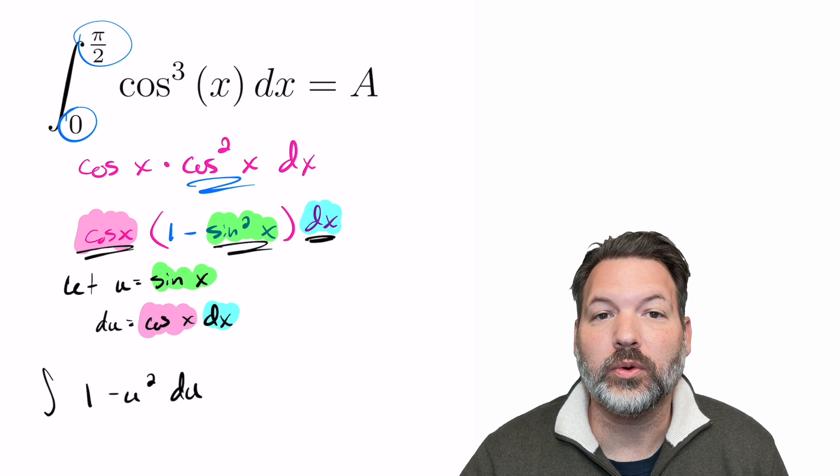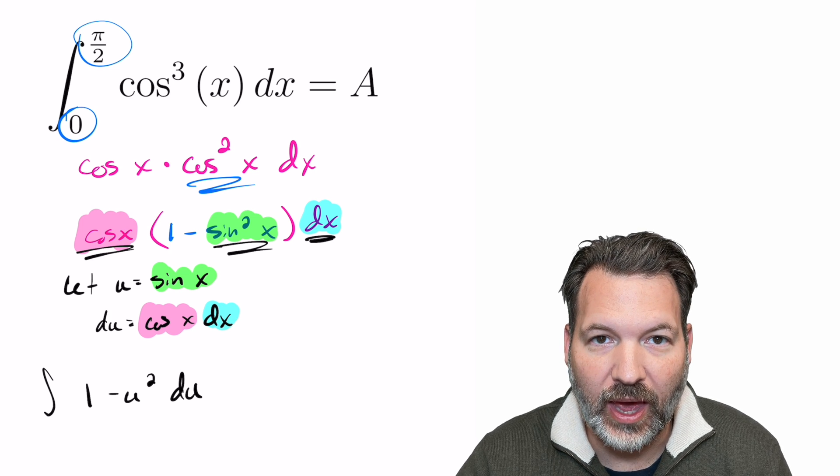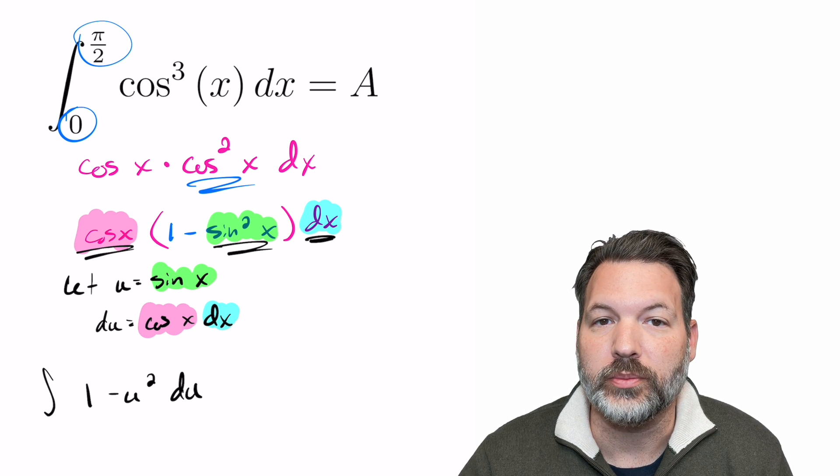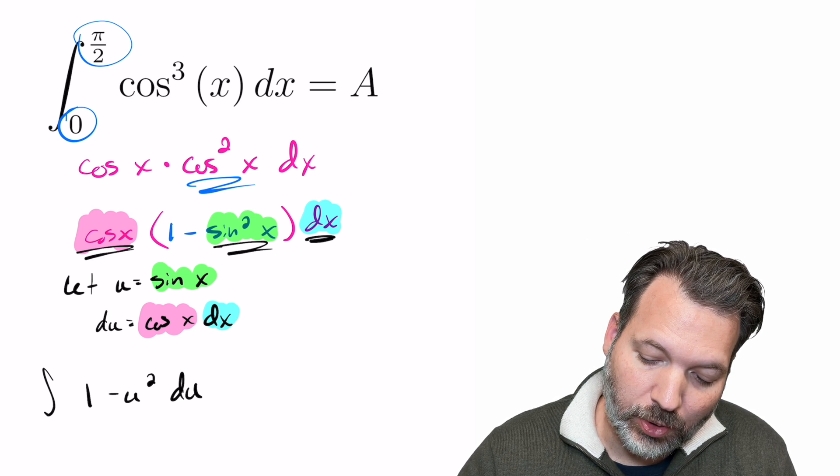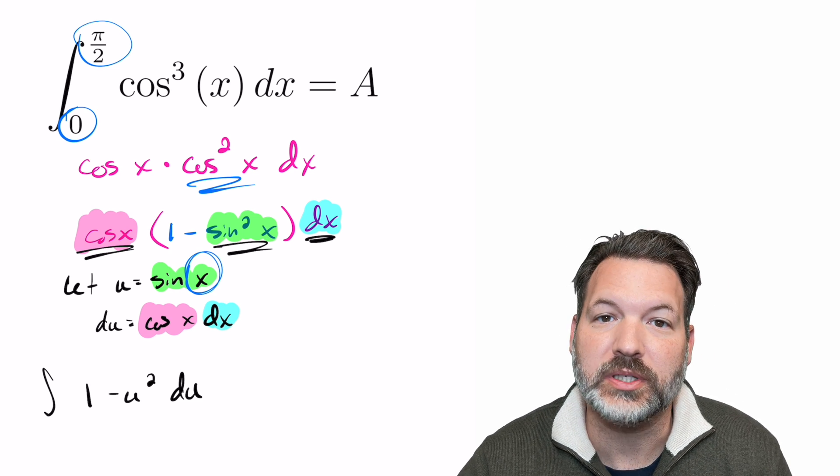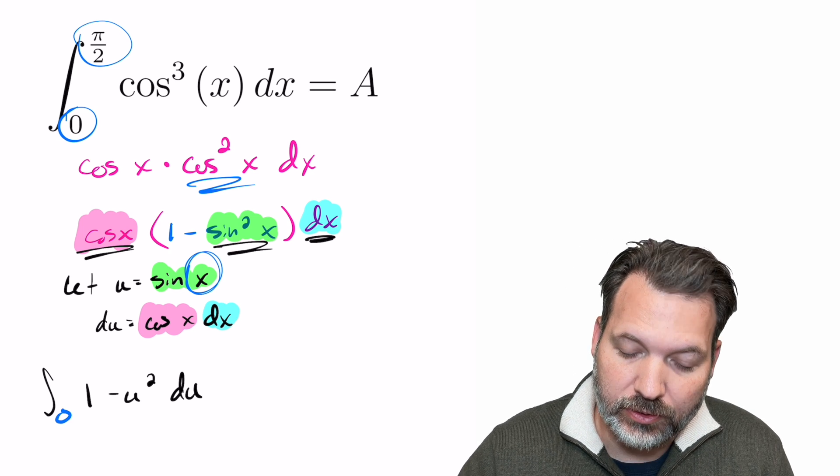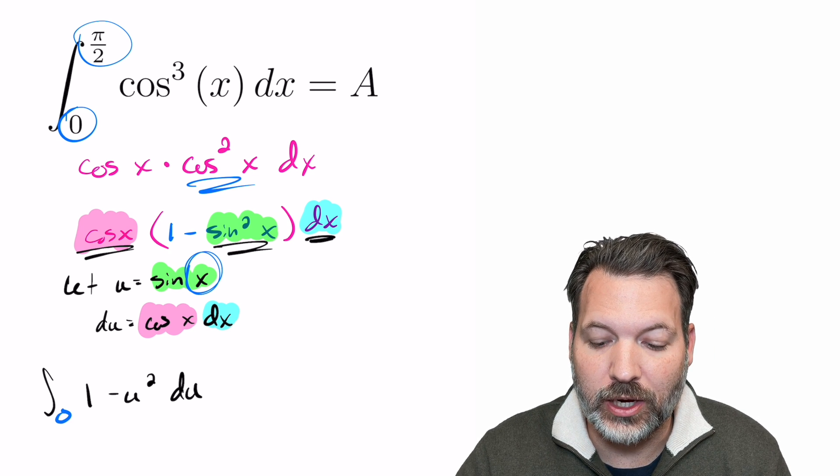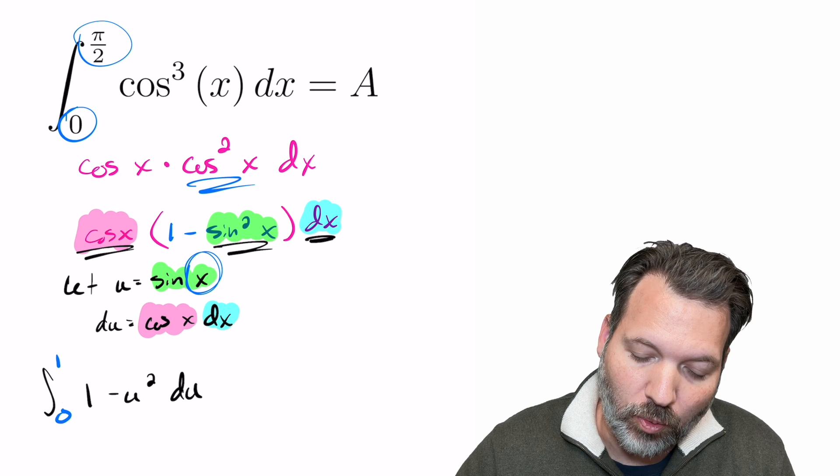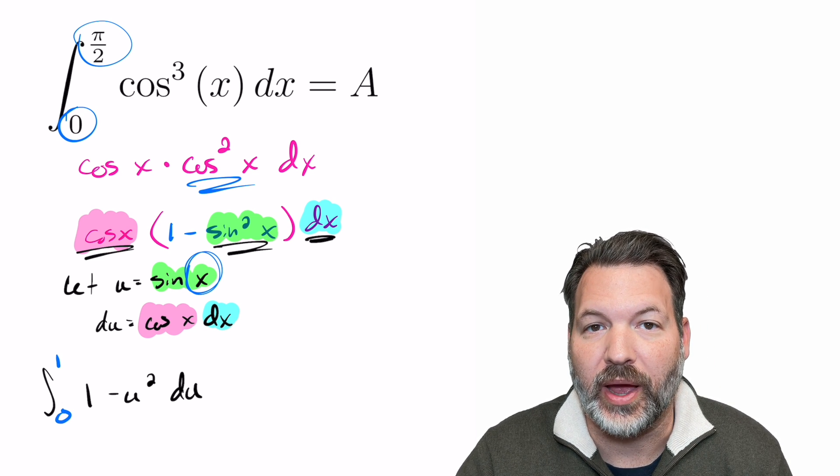Essentially, what we want to do is take the original bounds that were in terms of x and change them into bounds in terms of u. So basically, we're just going to plug them in for x in our substituting equation. For our lower bound at 0, sine of 0 is still 0. So that one actually doesn't change. But sine of pi over 2 is now 1. So we need to change our upper bound to 1.